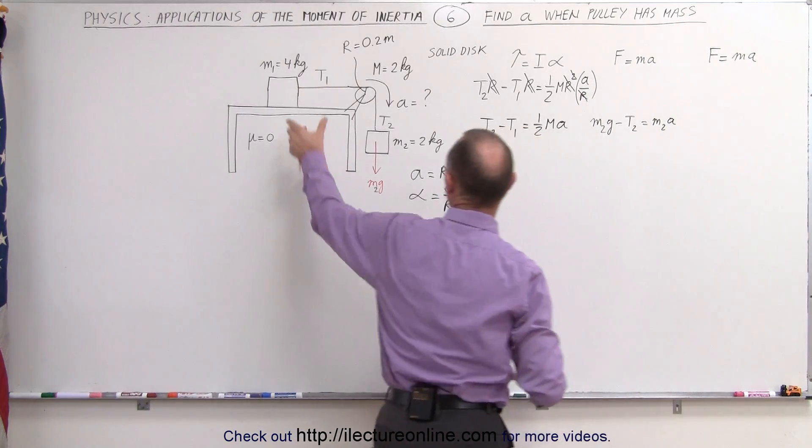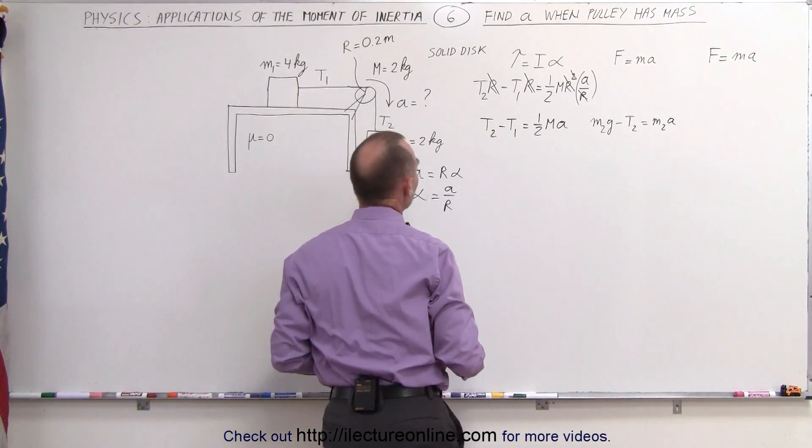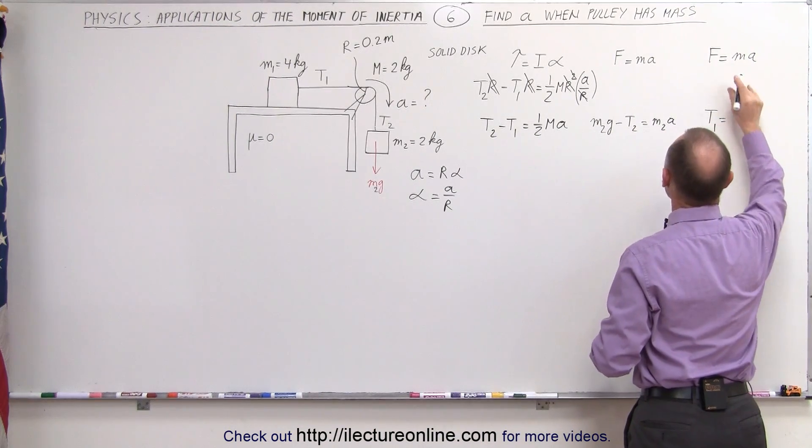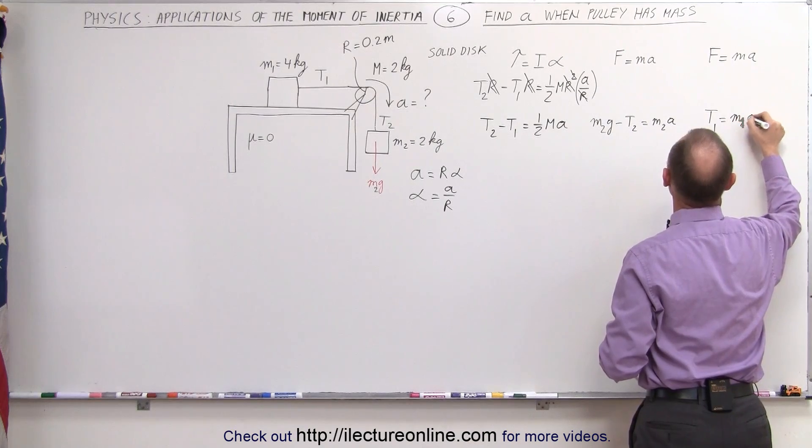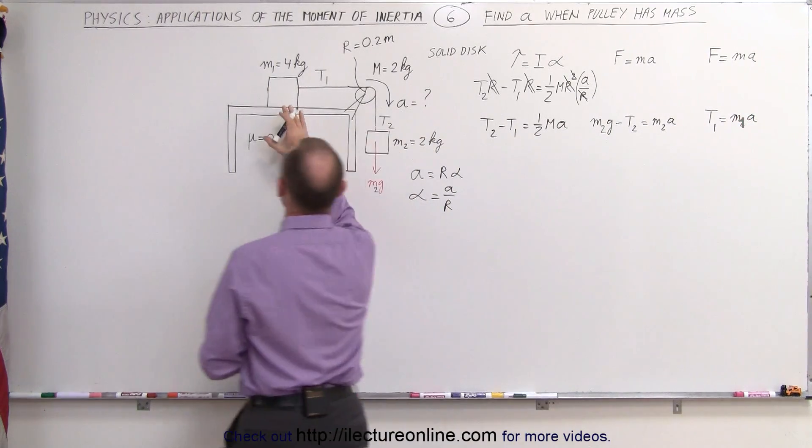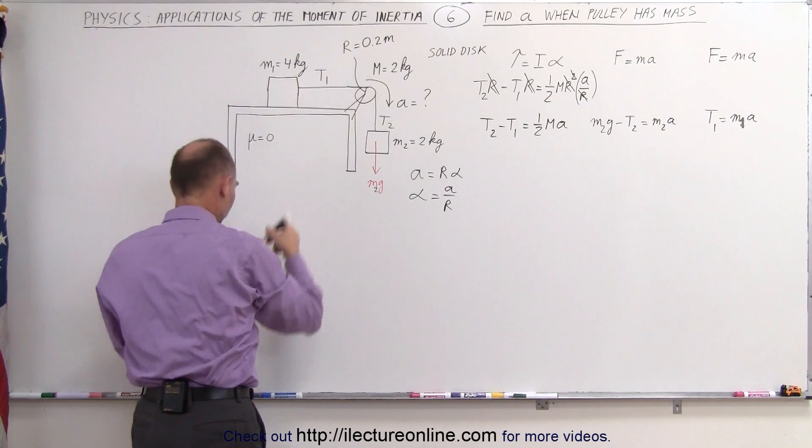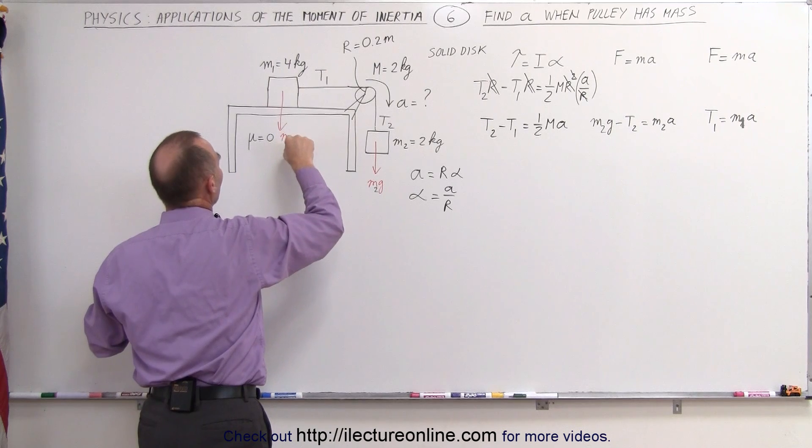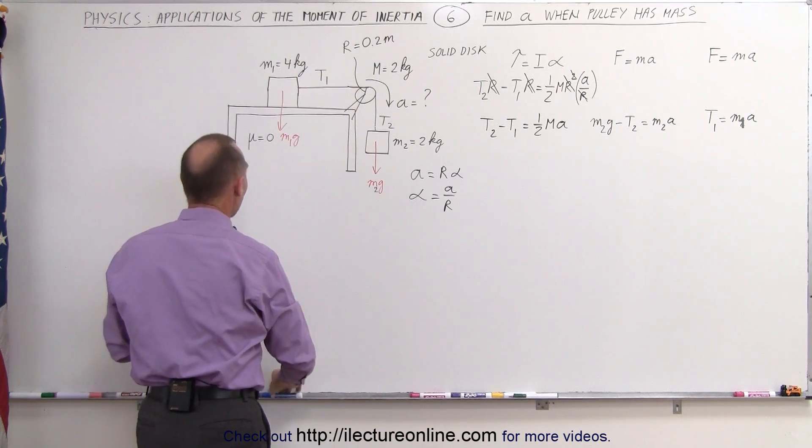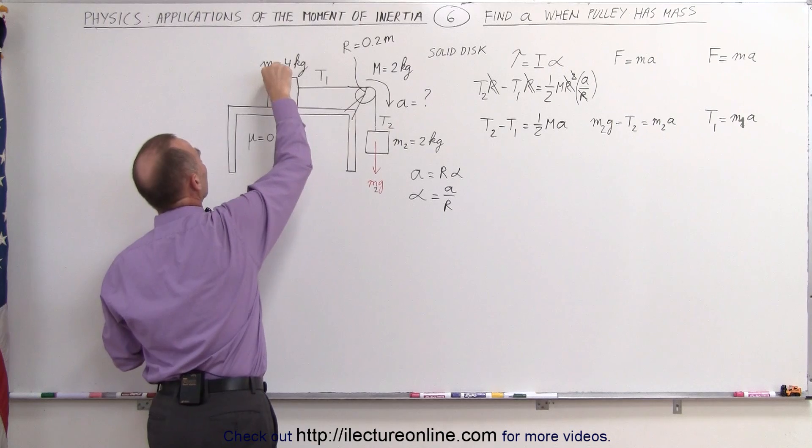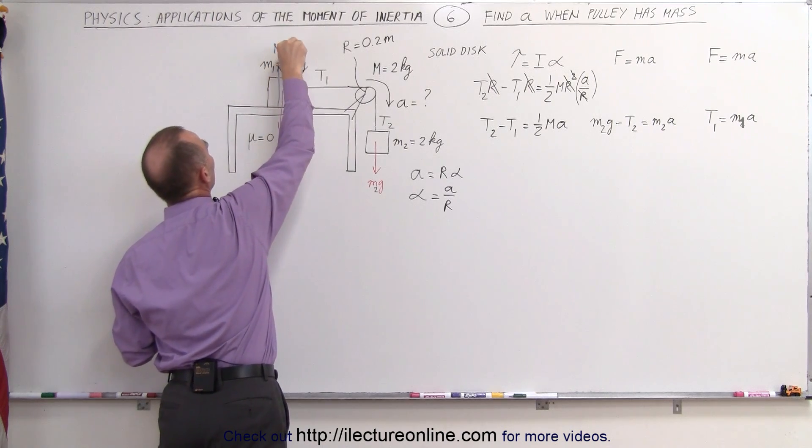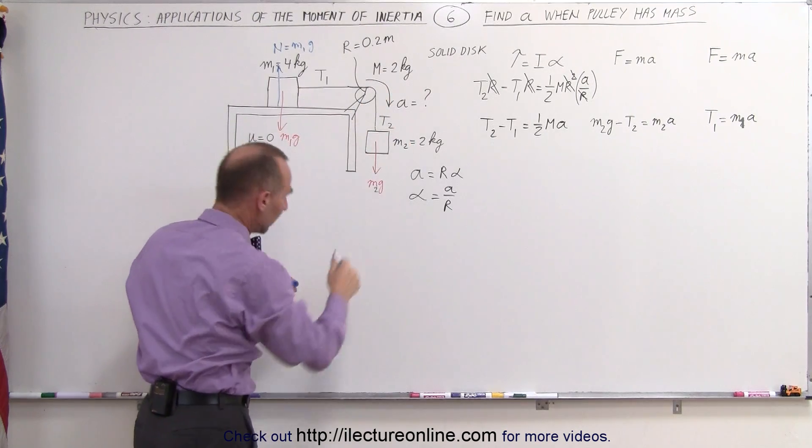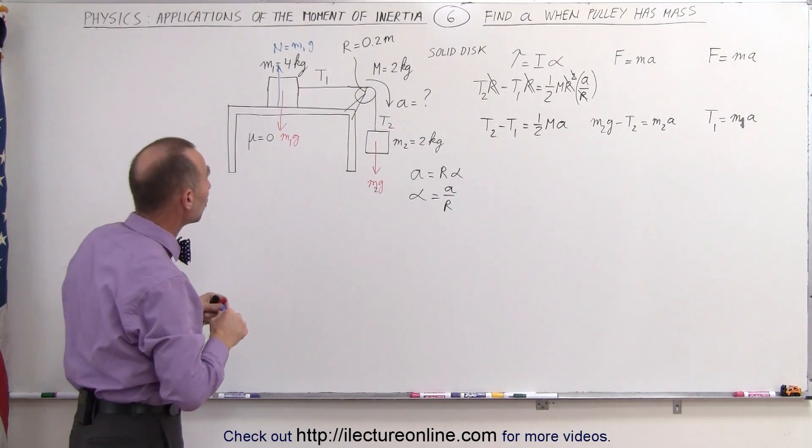The third equation relates to this right here. We can see then that the force acting on it, which is T1, equals its mass times acceleration. There's only one force acting on this block. Of course we have the force of the weight of the block M1g acting downward. We have the normal force pushing back. The normal force is equal to M1g. They cancel each other out. There's only one net force, T1, pulling and accelerating block M1 to the right.